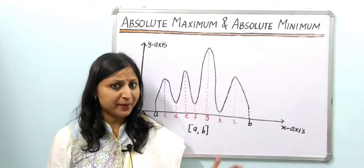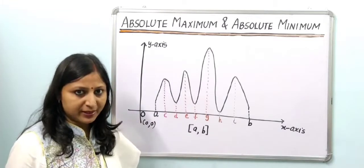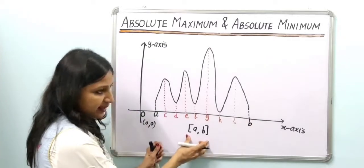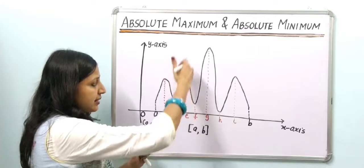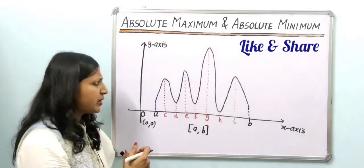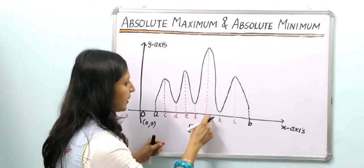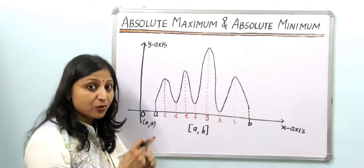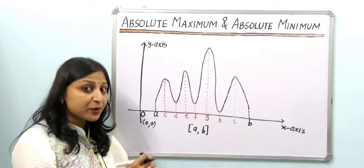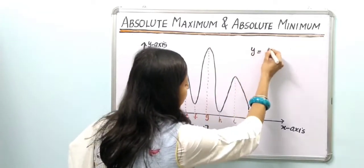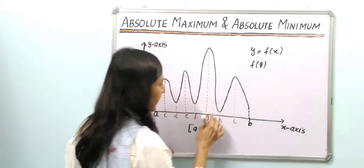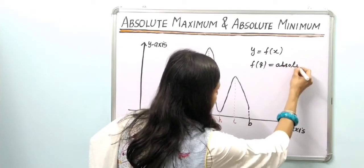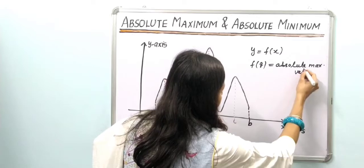Before moving to questions, let's understand what absolute maximum and absolute minimum mean. Looking at the graph of a function y = f(x), we can see many ups and downs over the given range. The point G where the function reaches its highest value is the absolute maximum — the value f(G) is called the absolute maximum value. Similarly, the lowest point gives us the absolute minimum value.